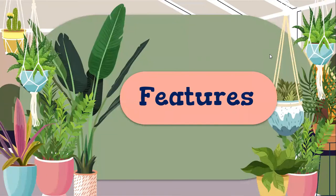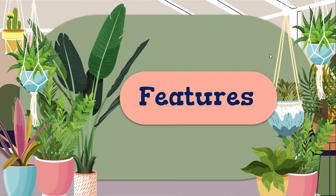The matrix of the budget of work shows the most essential learning competencies that every learner is expected to achieve at the end of each quarter by grade level. It is presented in four columns. Column A represents the quarter and grade level. Column B shows the continuous numbering of MELC per grade level or quarter. Column C states the learning competencies of the MELC, with prerequisite skills placed before the terminal objectives of the numbered most essential learning competencies. Column D presents the number of days to be taught for each MELC to be realized.